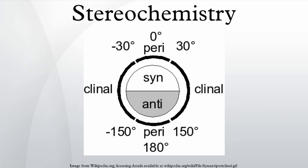A torsion angle between 0° and 30° is called synperiplanar or syn conformation; a torsion angle between 30° and 90° and -30° to -90° is called synclinal, gauche, or skew; a torsion angle between 90° and 150° and -90° to -150° is called anticlinal; a torsion angle between ±150° and 180° is called antiperiplanar, anti, or trans.